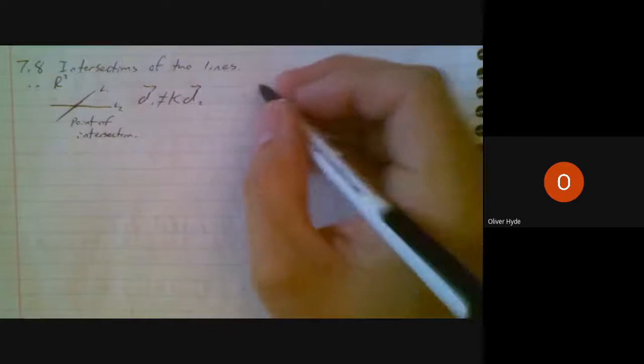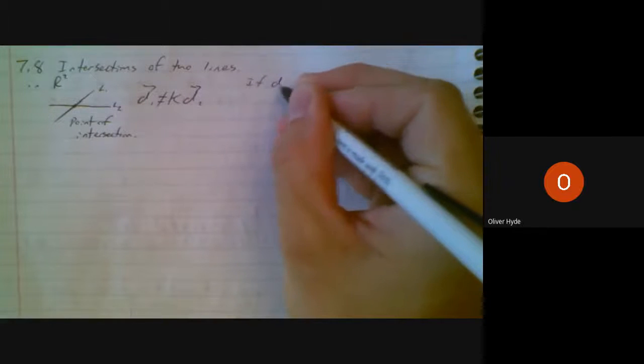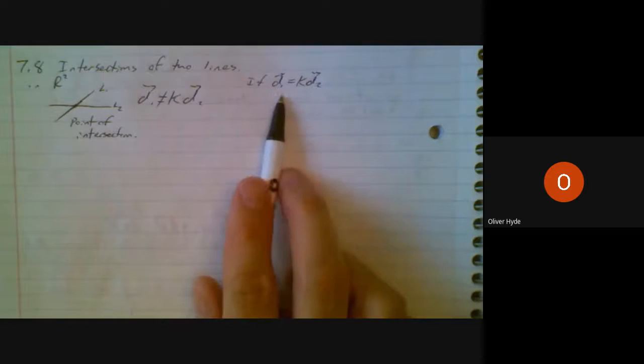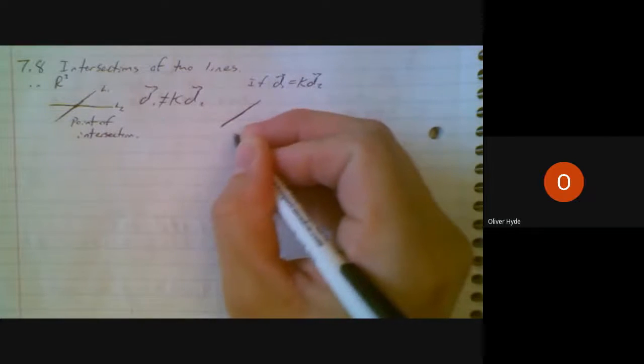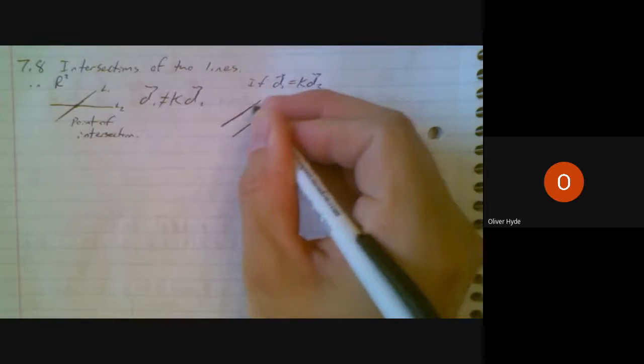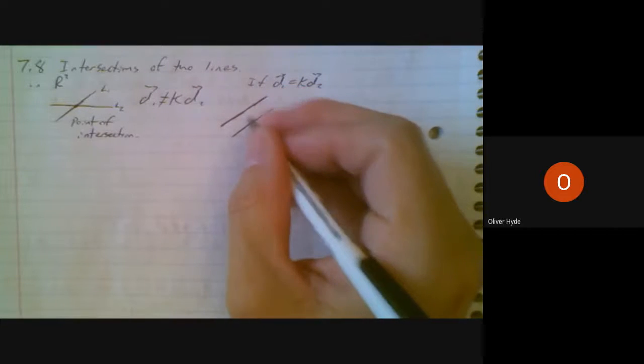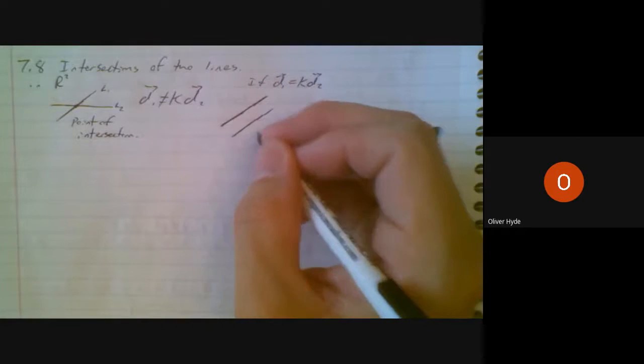If d1 is a scalar multiple of d2, we need to be careful because here we have two parallel direction vectors. That does not mean that we have parallel lines, depending on which definition of parallel you subscribe to. I subscribe to the definition that parallel means equidistant and that distant means non-zero distance.